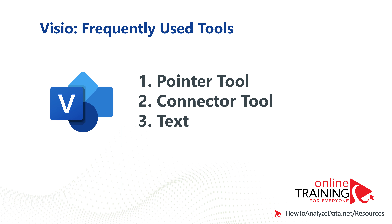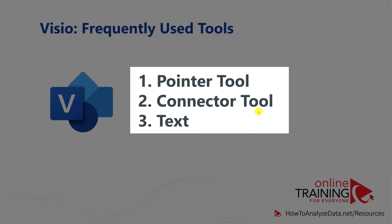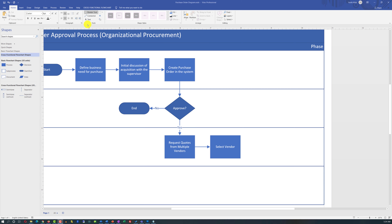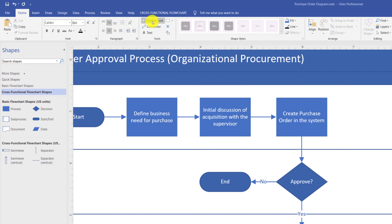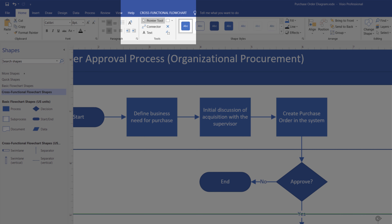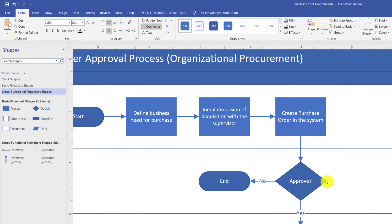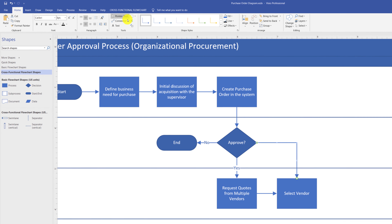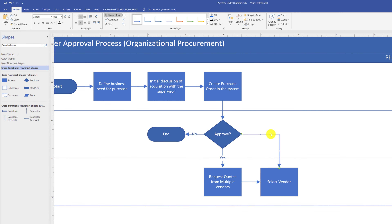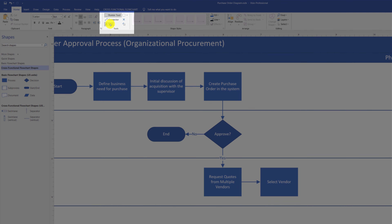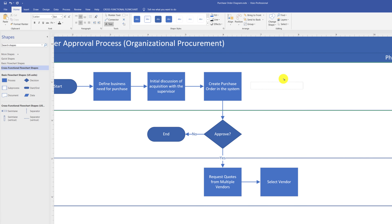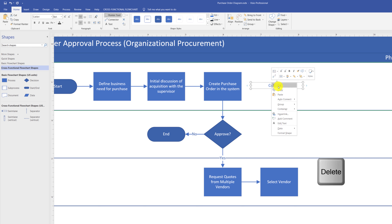I was frequently switching between the Pointer tool and Connector tool — the three most-used tools in Visio are Pointer, Connector, and Text, all in the tools section of the ribbon. With the Pointer tool you can drag, resize, and access shape properties. With the Connector tool you draw lines between shapes. To delete a line, switch back to Pointer, select the line, and click Cut or press Delete. The Text tool lets you bring text into the diagram — position the cursor and start typing; to delete text, switch to Pointer, select it, and use Cut or Delete.